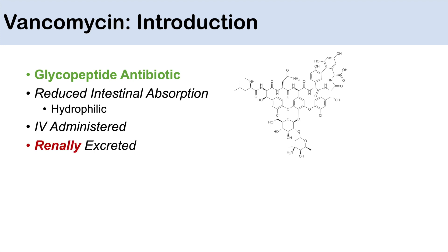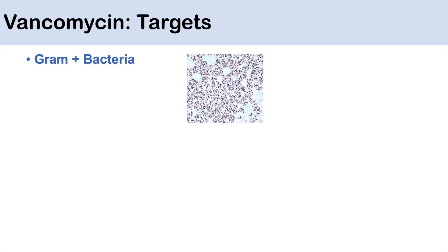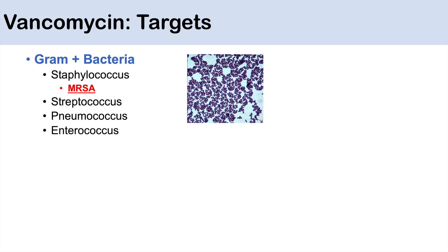Vancomycin is renally excreted, and this will become important when we talk about some of the adverse reactions to vancomycin. So what are some of those bacterial targets? Vancomycin only targets gram-positive bacteria. Some of those bacteria include Staphylococcus, and one of the main bacteria that vancomycin is used for is MRSA, or methicillin-resistant Staphylococcus aureus. Other bacteria it can target are Streptococcus, Pneumococcus, and Enterococcus.